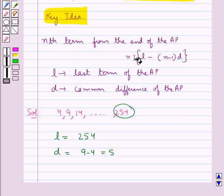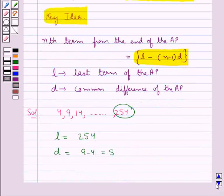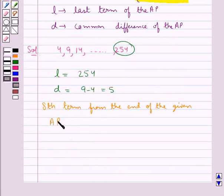Nth term from the end is L minus n minus 1 into d, and we have to find the 8th term from the end. So here we would take n as 8, so 8th term from the end of the given AP is equal to L minus 8 minus 1 into d.